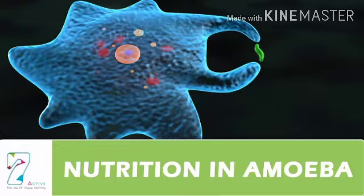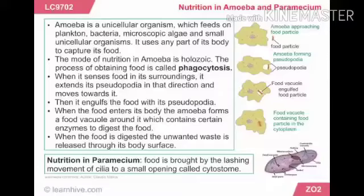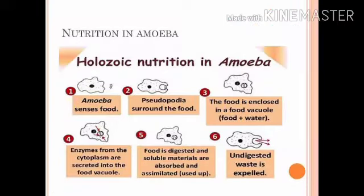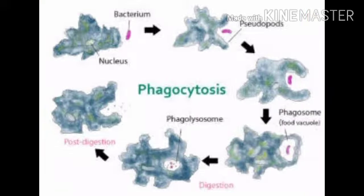Our next topic is nutrition in amoeba. Amoeba is a unicellular organism which we cannot see with the naked eye. It feeds on plankton, bacteria, microscopic algae, and unicellular organisms. The mode of nutrition in amoeba is also holozoic. The steps of nutrition in amoeba: first, amoeba senses food; then it draws pseudopodia surrounding the food; food is enclosed in a food vacuole; enzymes from the cytoplasm are secreted into the food vacuole and digest the food; and the undigested food is thrown out of the body by simple diffusion.